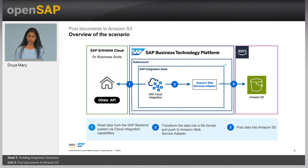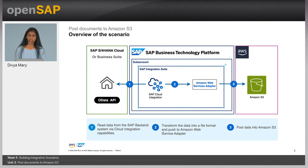In order to build the scenarios, we have many APIs exposed from SAP cloud applications, which you can also discover and explore in SAP Business Accelerator Hub. You could read this data, connect using OData, SOAP, or REST API. You could transform this data using many of the transformation capabilities available in cloud integration within SAP Integration Suite. And finally, connect to Amazon S3 using the available Amazon Web Service Adapter to post this data as a file into Amazon S3.